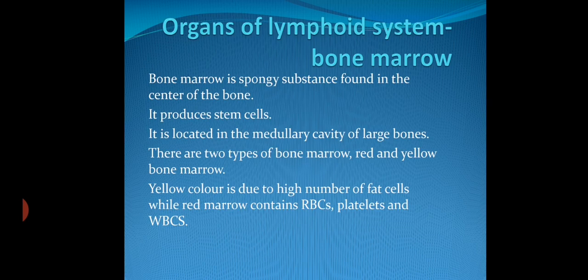Bone marrow is located in the medullary cavity of large bones. There are two types of bone marrow: red and yellow bone marrow. Yellow bone marrow is yellow in color due to a high number of fat cells, while red bone marrow contains red blood cells, platelets, and WBCs.